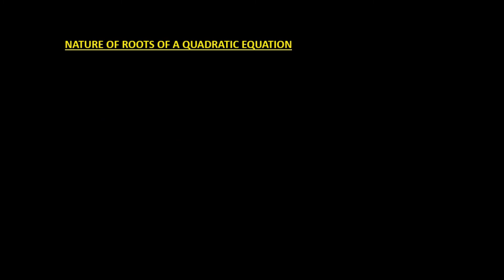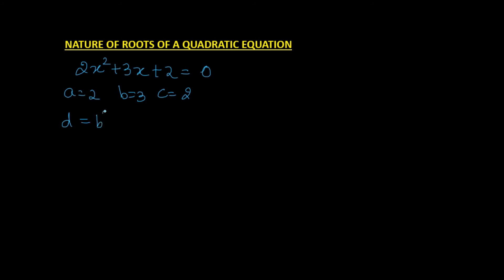Let us see what happens when D is negative. For example, 2x² + 3x + 2 = 0. Here a = 2, b = 3, and c = 2. The discriminant D = b² − 4ac = 3² − 4·2·2 = 9 − 16 = −7. So our D is less than 0.